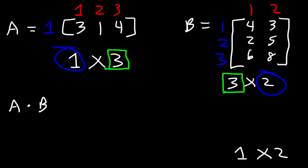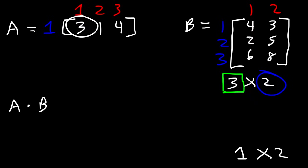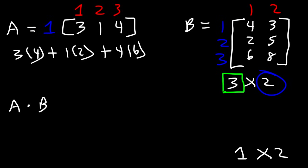So let's go ahead and multiply those two matrices. You need to take the numbers in the first row of matrix A and multiply them by the numbers in the first column of matrix B. So we're going to multiply 3 by 4, then 1 times 2, and then 4 times 6. That gives us 12 plus 2 plus 24, which adds up to 38.